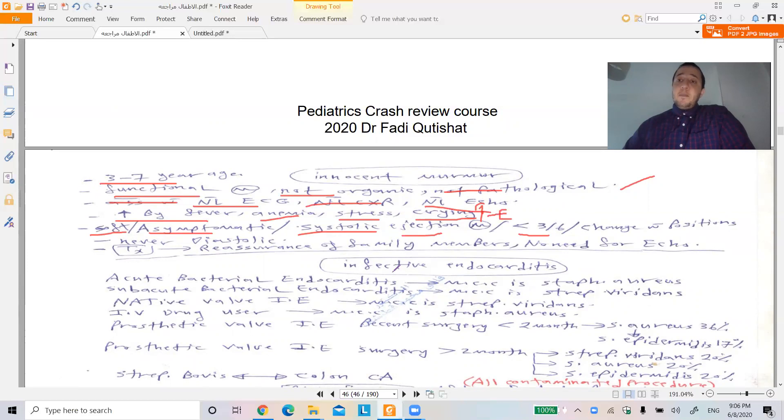That's how it appears, and then you see the next one is parasternal eject. That's right, and then you see the systolic.